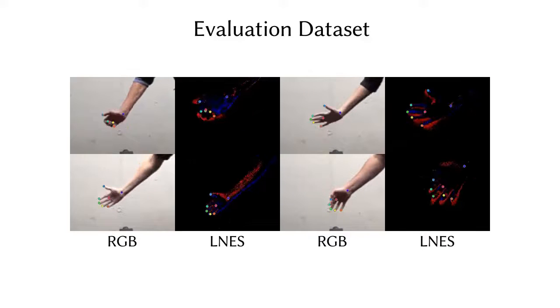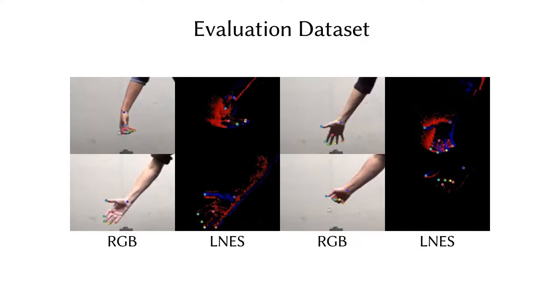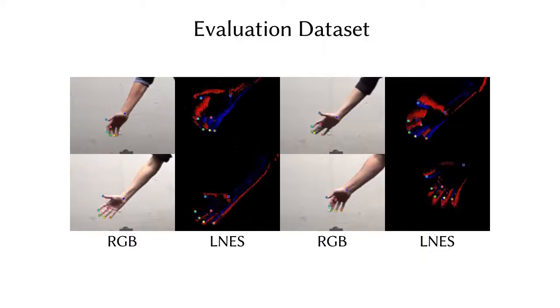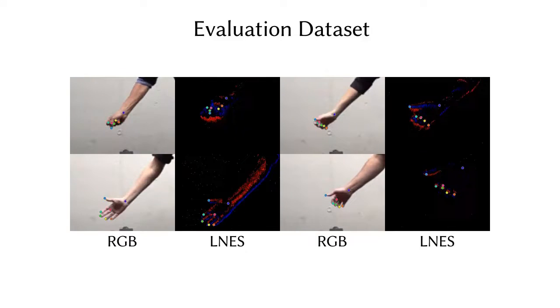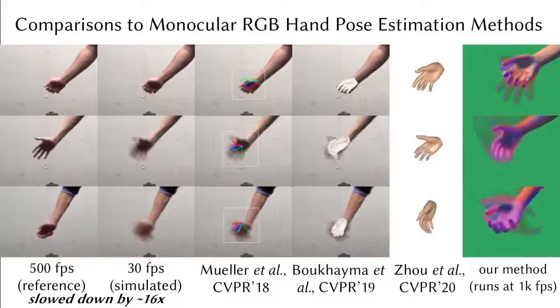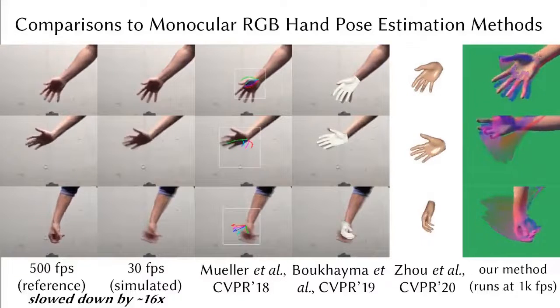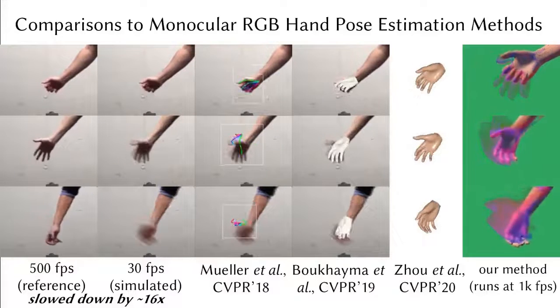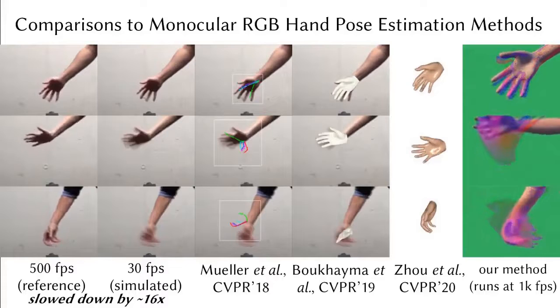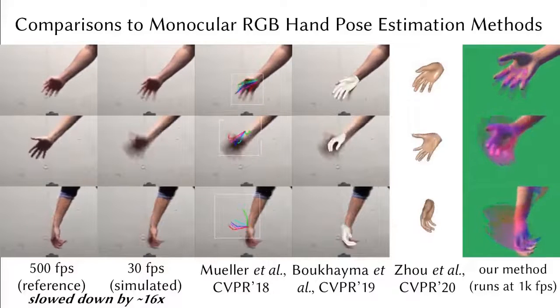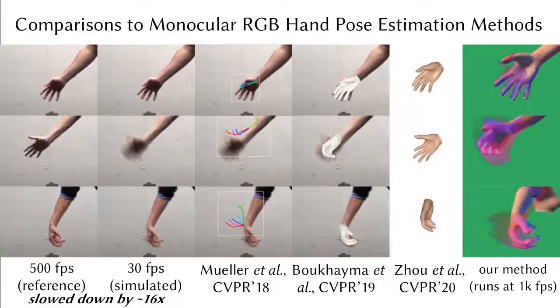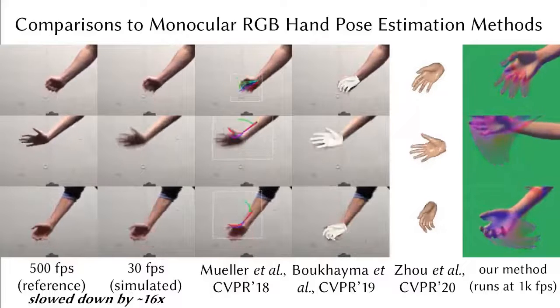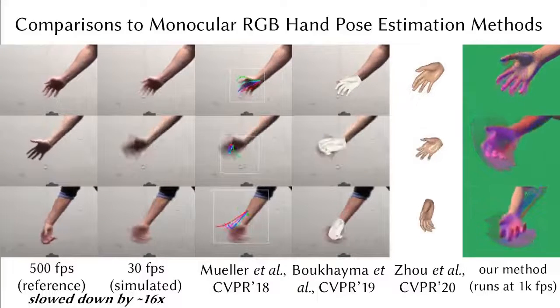For the ease of visual assessment, all of the sequences shown in the next two sections are slowed down by 16 times. Note that we render the predictions using the mean hand shape for visualization purposes. Please ignore the motion of the arm, as its prediction is outside the scope of this work; we render the arm so that the hand is not floating in the air.